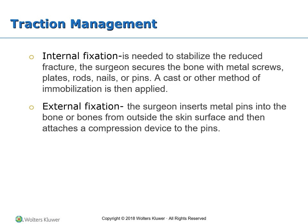If internal fixation is needed to stabilize the reduced fracture, the surgeon secures the bone with metal screws, plates, rods, nails, or pins, and a cast or other method of immobilization is then applied. Open reduction is required when soft tissue, nerves, or blood vessels are caught between the ends of broken bone pieces; when the bone has wide separation; when comminuted fractures are present; when the patella and other joints are fractured; when open fractures are evident; when wound debridement is necessary; or when internal fixation is needed.